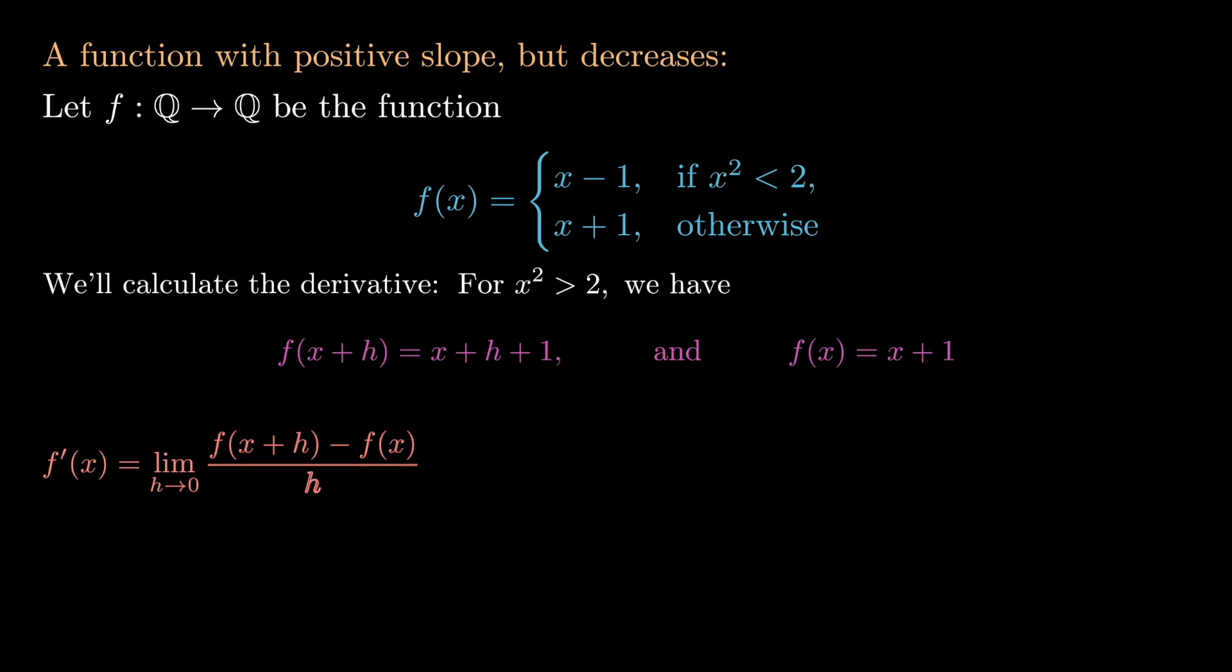Again we'll calculate the derivative using the standard formula, the limit as h tends towards 0 of f of x plus h minus f of x over h. Inserting these formulas we have x plus h plus 1 minus x plus 1 all divided by h. Again everything will cancel here, so we end up with h over h, but that's just 1, and in particular that's again positive.